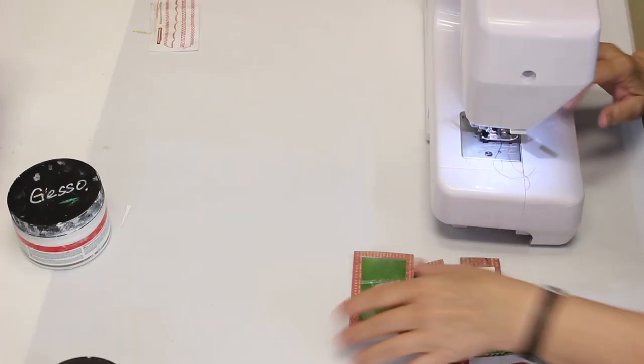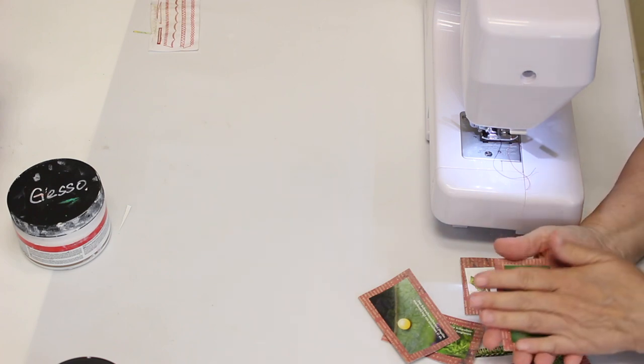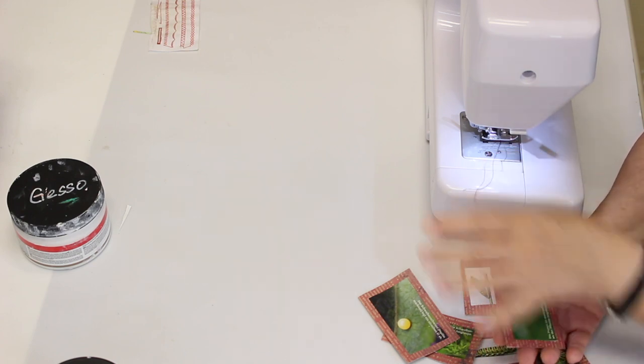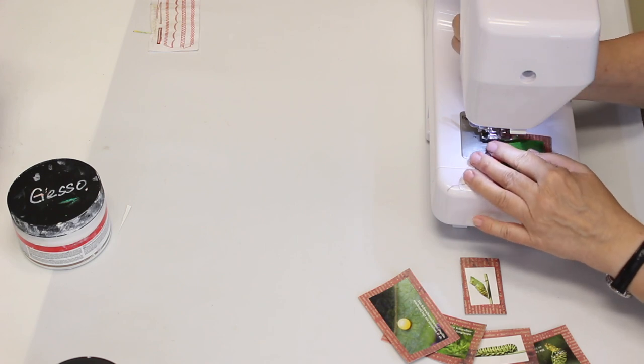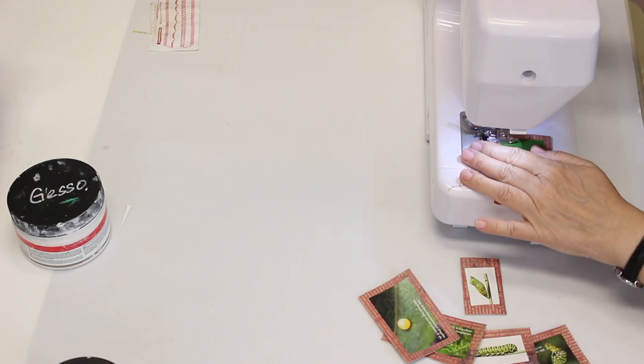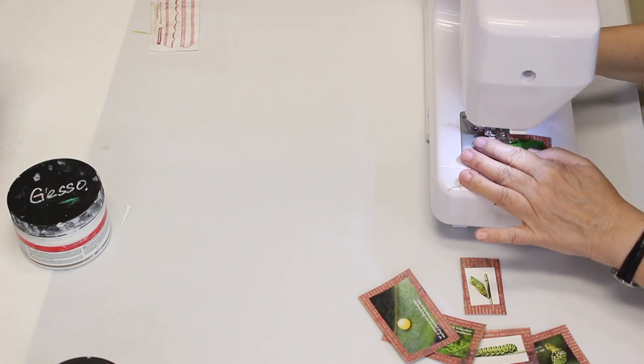Now I have glued them and I went over with matte medium also over the whole magazine pages. And then decided I want to stitch again. But this time just with a straight stitch, maybe on a three, which is the, I have like four sizes. One, two, three, four. Four is the biggest. So I'm gonna go for a three.